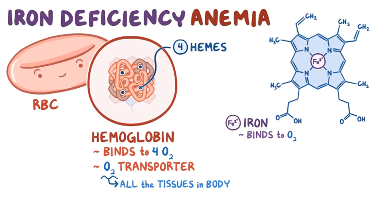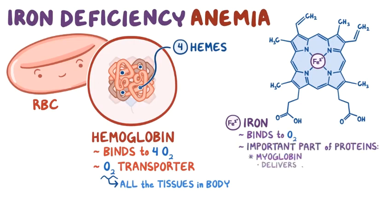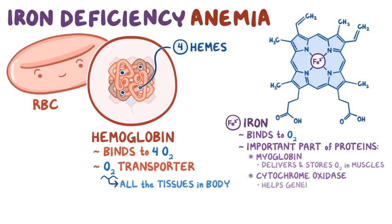Additionally, iron is also an important part of proteins like myoglobin, which delivers and stores oxygen in muscles, and mitochondrial enzymes, like cytochrome oxidase, which helps generate ATP.